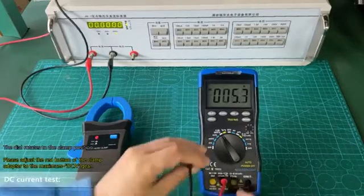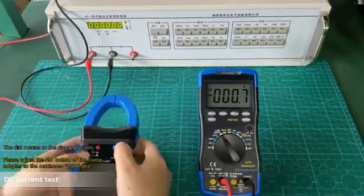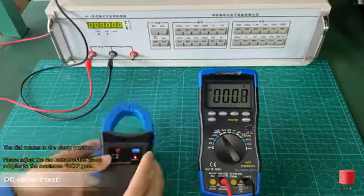DC current test: The dial rotates to the clamp position. Please adjust the red button of the clamp adapter to the maximum DCA.